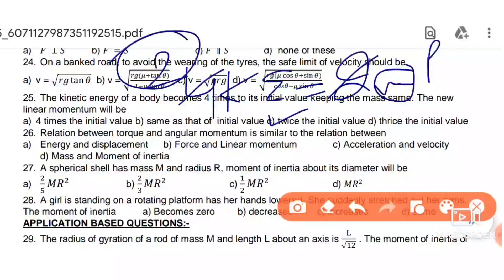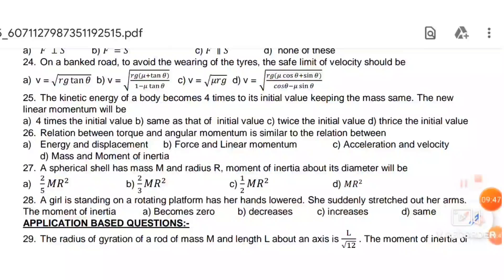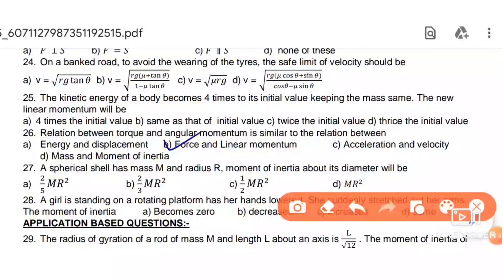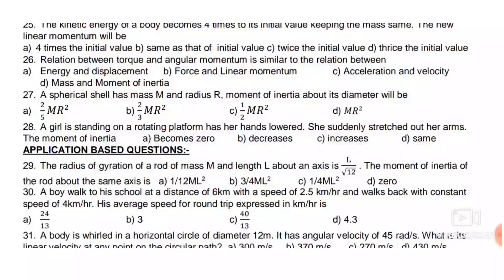Next: the relation between torque and angular momentum is τ = dL/dt. This is similar to the relation between force and linear momentum: F = dp/dt. So option B — force and linear momentum — is the matching pair. The moment of inertia of a spherical shell about its diameter is 2/5 mr².